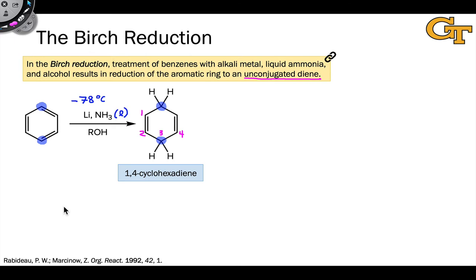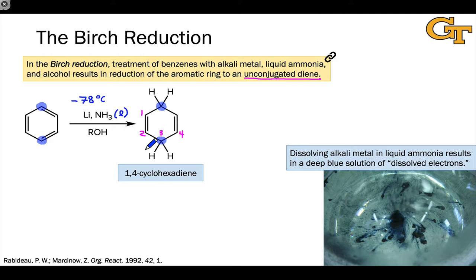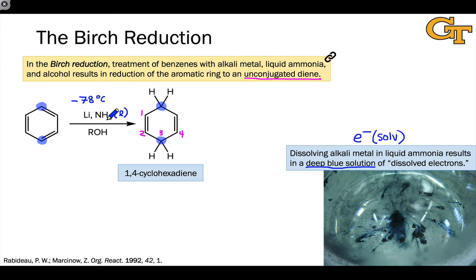To get the ball rolling on the mechanism, it helps to understand what happens when we take an alkali metal and dissolve it in liquid ammonia. There's actually an electron transfer from the elemental metal, and the evidence for this is a deep blue solution that forms. That deep blue solution is due to what are called dissolved electrons, sometimes represented as E⁻(solv), showing this electron is dissolved in liquid ammonia. Thinking of the reaction conditions as a source of dissolved electrons is key to kicking off the mechanism.